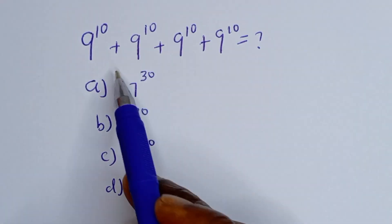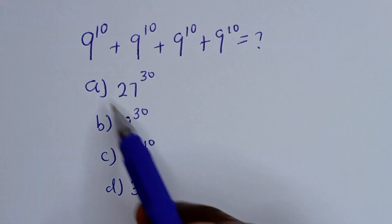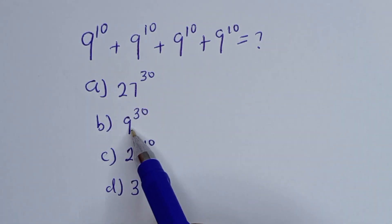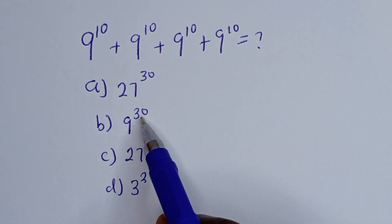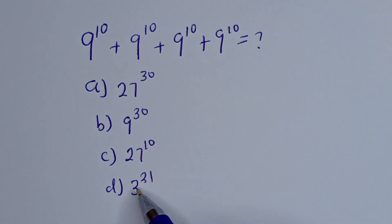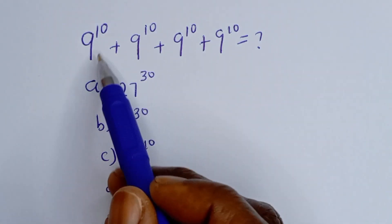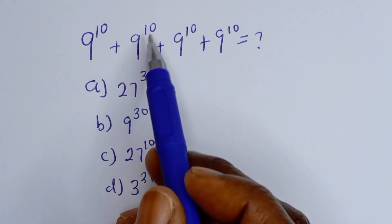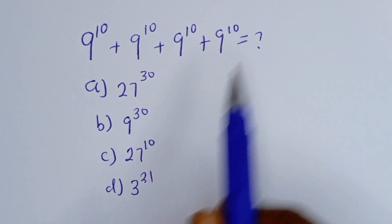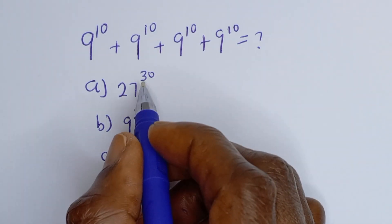How to simplify this math problem. We are going to select the option from the following: A is equal to 27 to the power of 30, B is equal to 9 to the power of 30, C is equal to 27 to the power of 10, and D is equal to 30 to the power of 21. The equation is 9 to the power of 10 plus 9 to the power of 10 plus 9 to the power of 10.